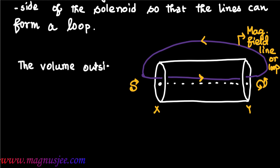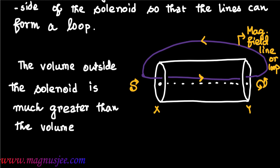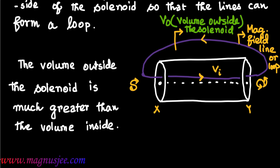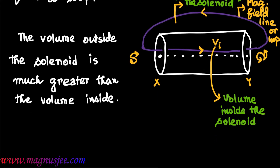The volume outside the solenoid, V0, is much greater than the volume inside the solenoid, VI. V0 is the volume outside the solenoid and VI is the volume inside the solenoid. In this case, V0 is much greater than VI.